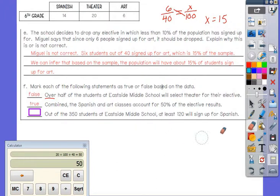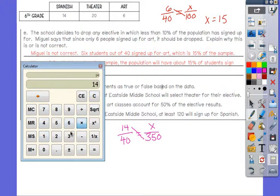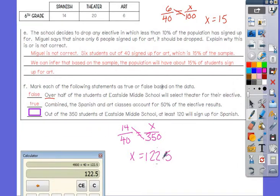The last one says, out of 350 students at Eastside Middle School, at least 120 will sign up for Spanish. Spanish is 14 out of 40 students. But if there are 350 total students, I need to know how many is actually signing up for Spanish. I would use this proportion: 14 times 350 divided by 40, that gives me X equals 122.5 students. They say at least 120 will sign up for Spanish. So will at least 120 sign up? Yeah, at least they will. So that is true.